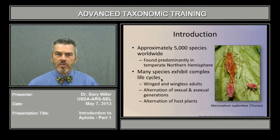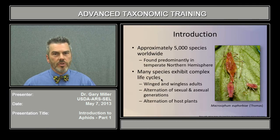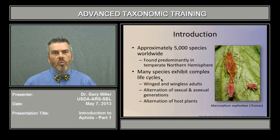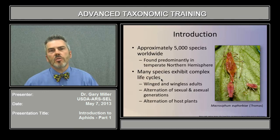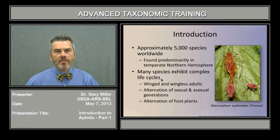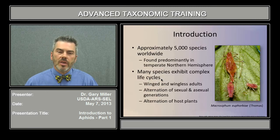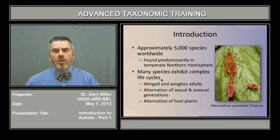Worldwide, there are approximately 5,000 species of aphids. In North America, we have about 1,400 species. They're found predominantly in the Northern Hemisphere, although they can be found in the tropics and throughout the world. Many species exhibit a complex life cycle — they have both wingless and winged adults. The wingless adults often are a stumbling block for identification because they look so much like immature aphids. They also exhibit alternation of sexual and asexual generations, and alternation of host plants, going from a woody host plant to a composite plant and then back.